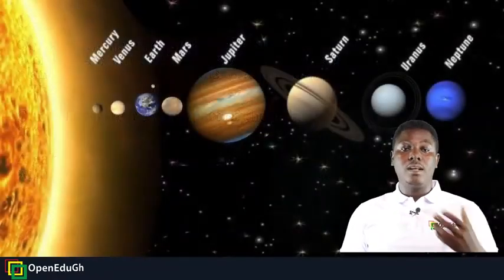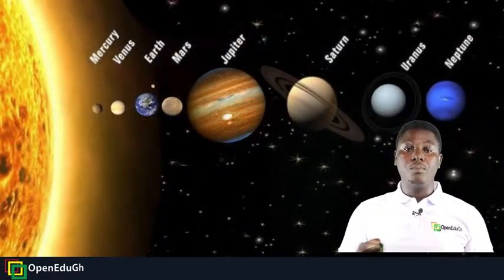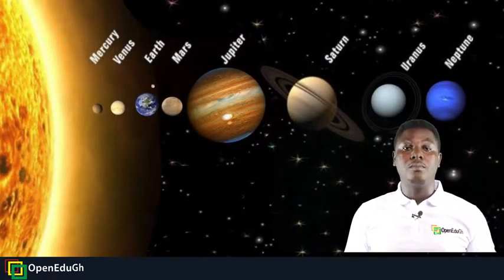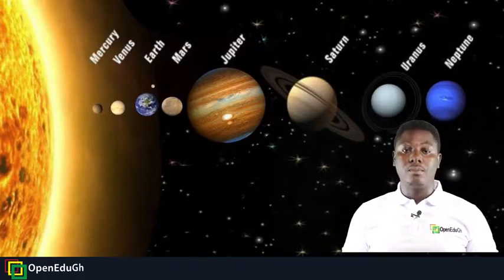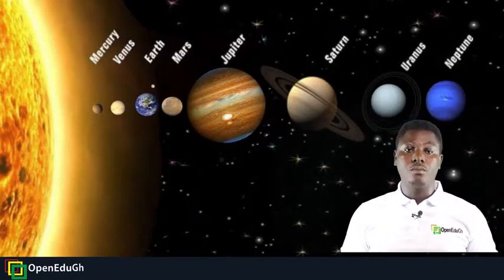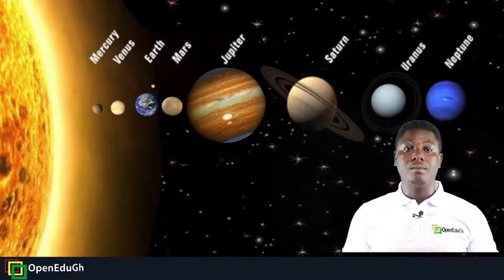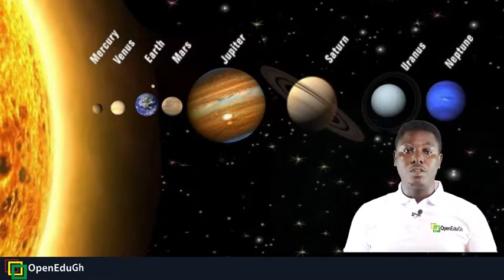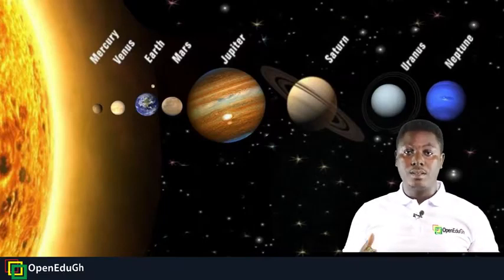The diagram on the screen depicts the nature of our solar system. The components of the solar system are: 1. The sun, 2. The planets, 3. The satellites, 4. Meteors, 5. Asteroids, 6. Comets.